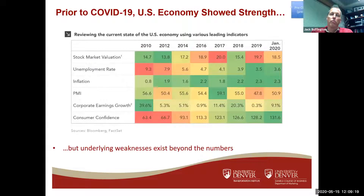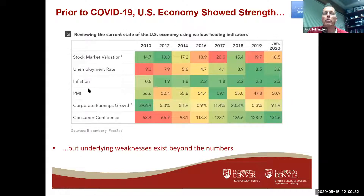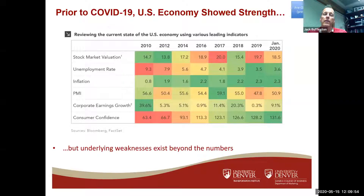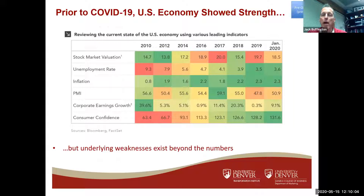As a result of this global supply chain, the global economy and the United States have been doing really well for the last 10 years. Right before COVID hit, indicators showed the US economy was very strong. But what we're going to talk about is that may be true, but there were some underlying weaknesses beyond the numbers that some trigger was going to set off. It just happened to be COVID, but it was bound to happen.